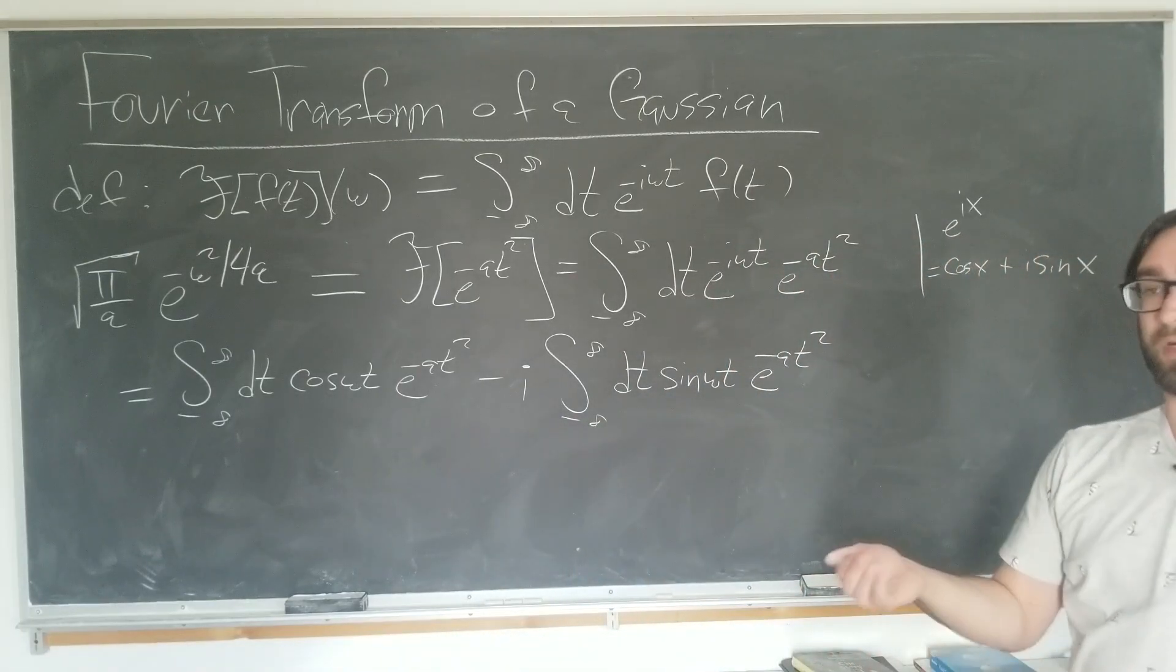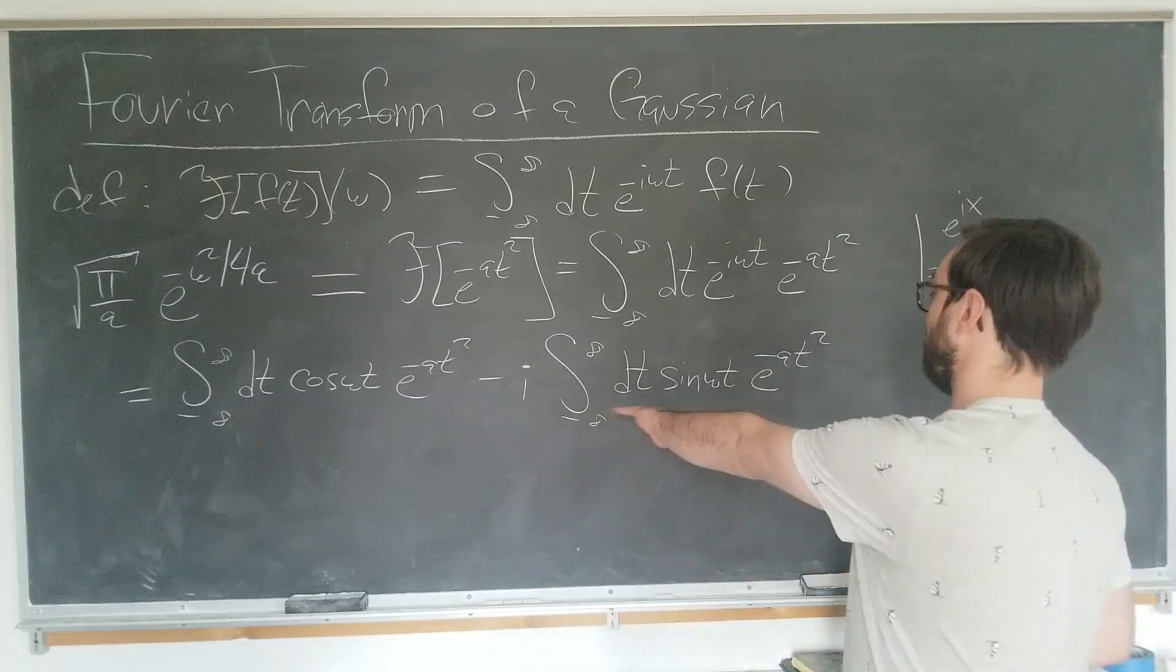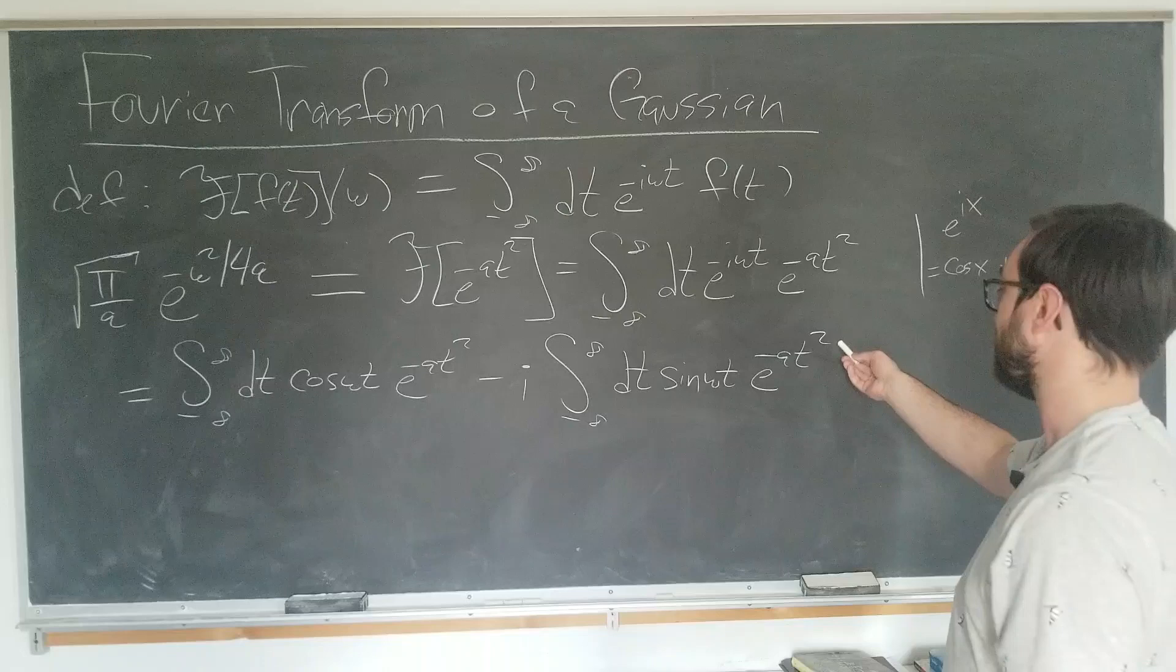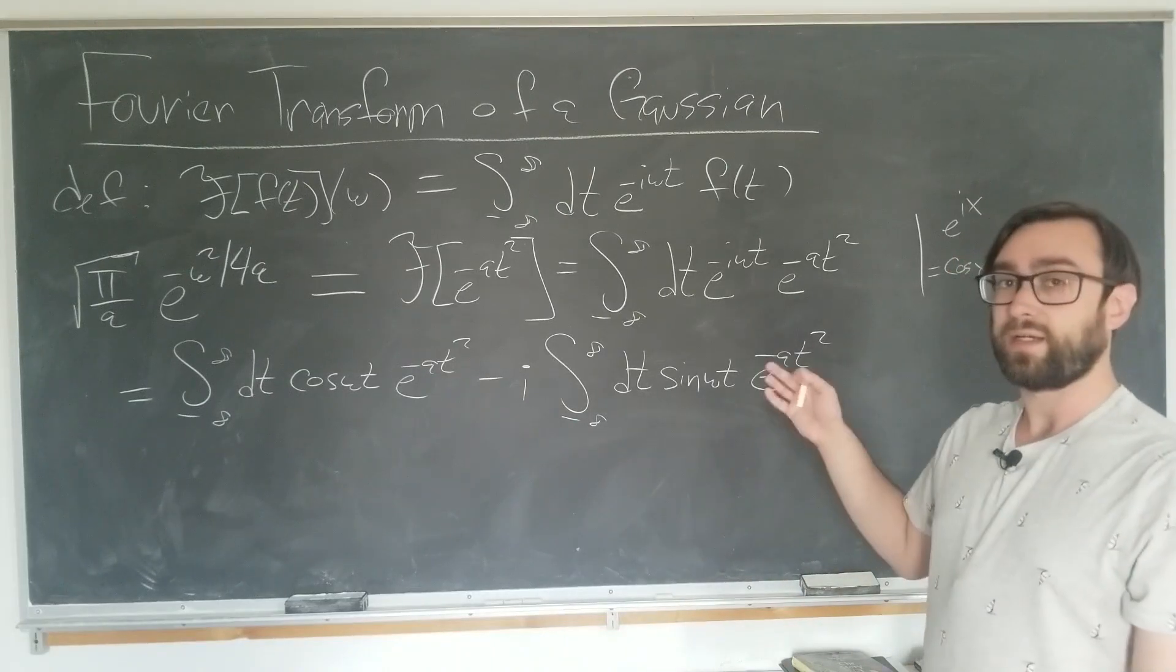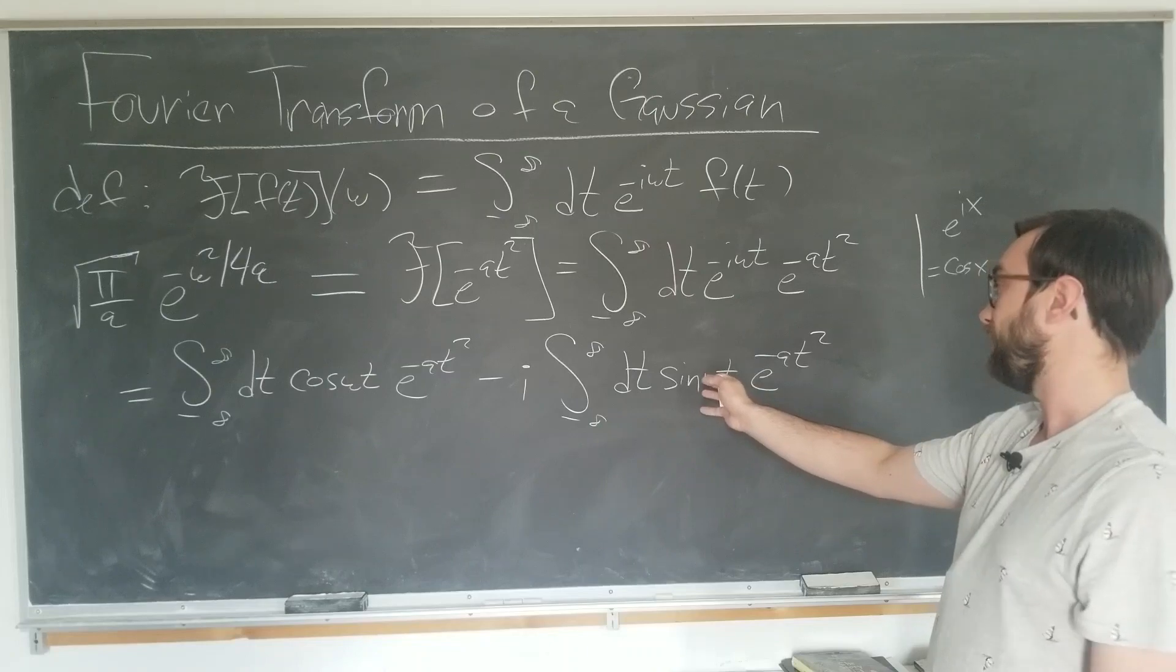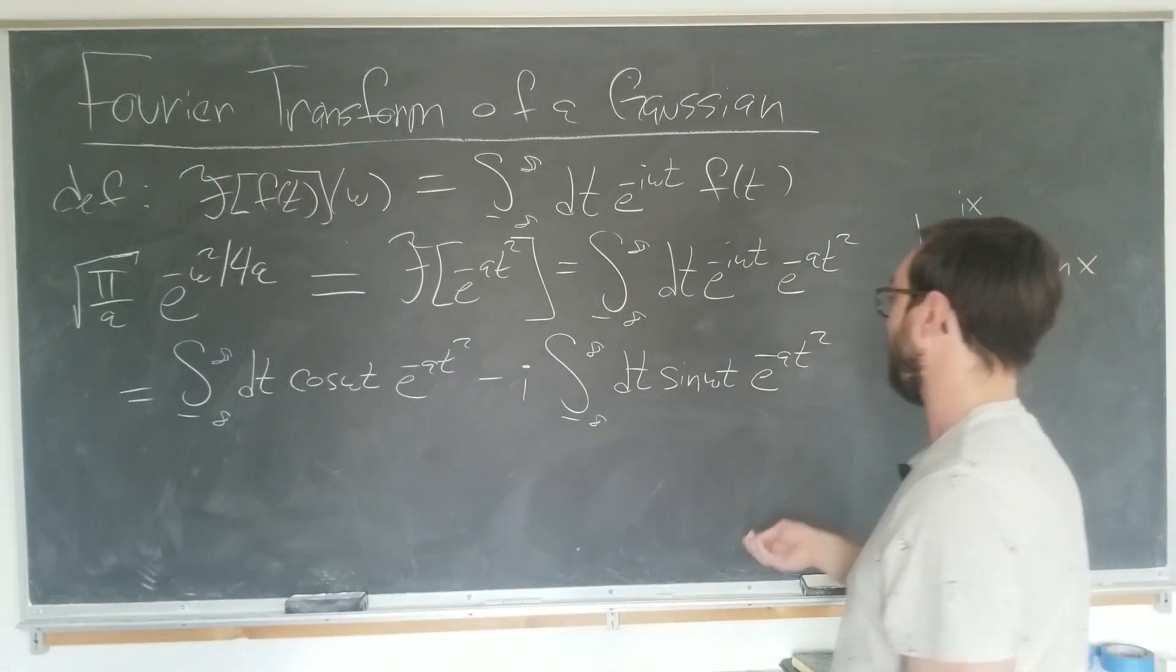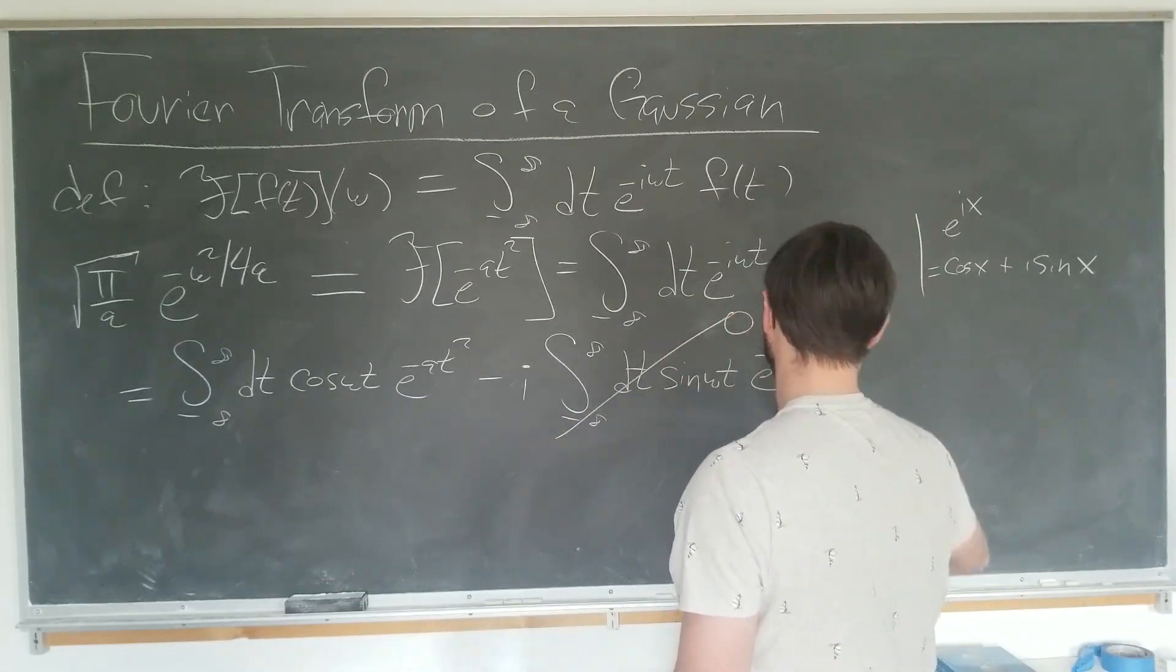And the first thing that we should notice is that our imaginary constant integral is simply an odd function. Since if we plug minus t into here, this becomes an even function and this is an odd function here. So the entire thing is odd. And when we have an odd function over a symmetric domain, it's actually zero.